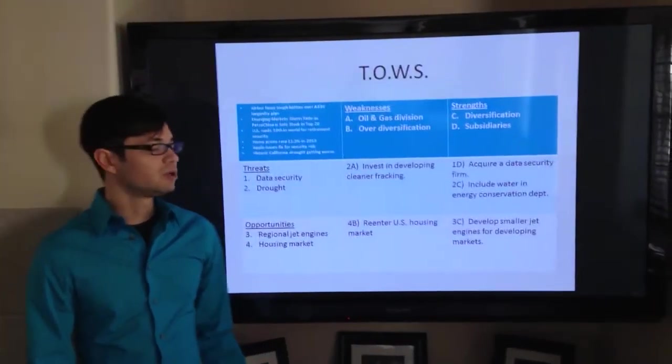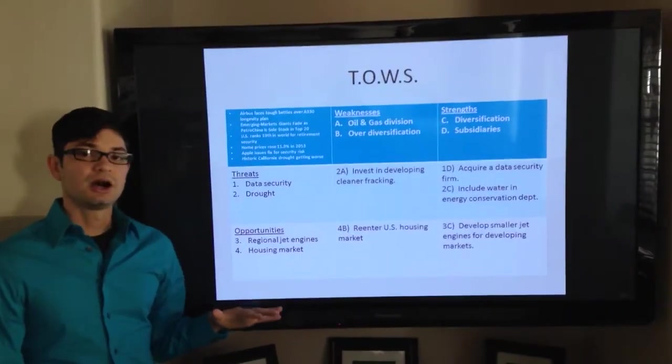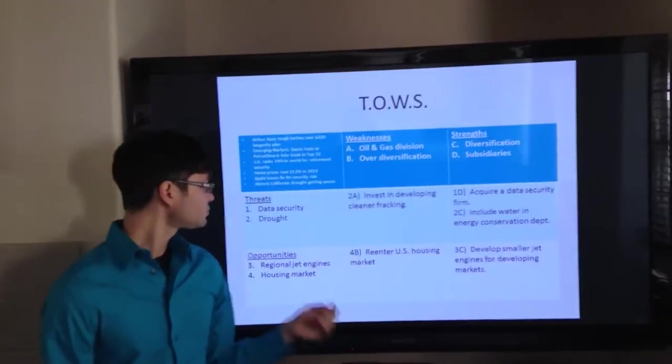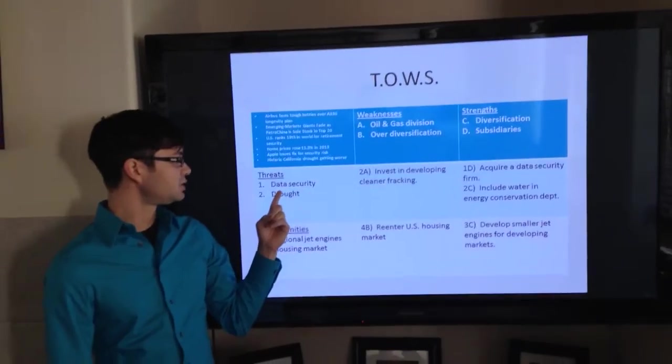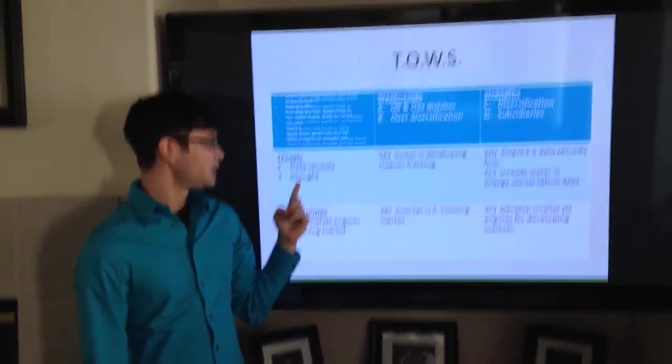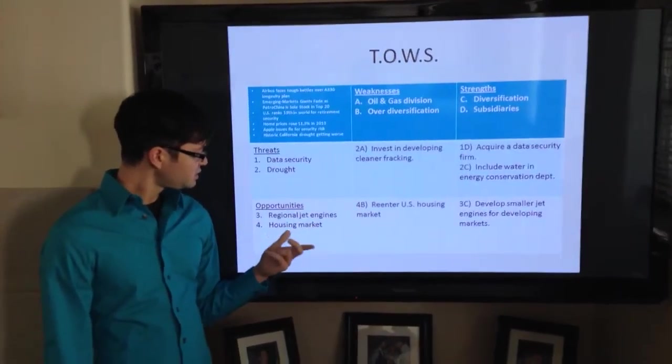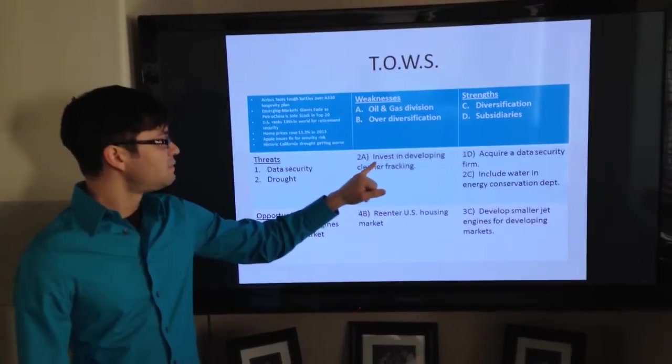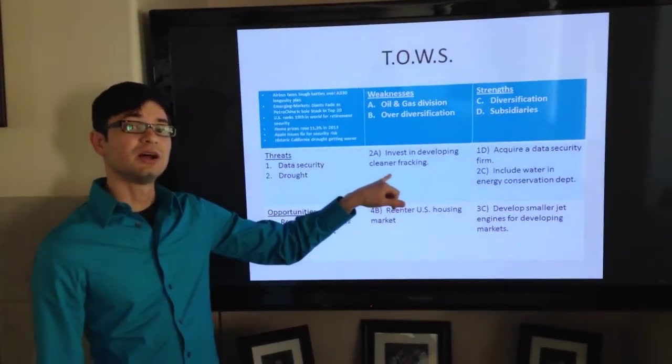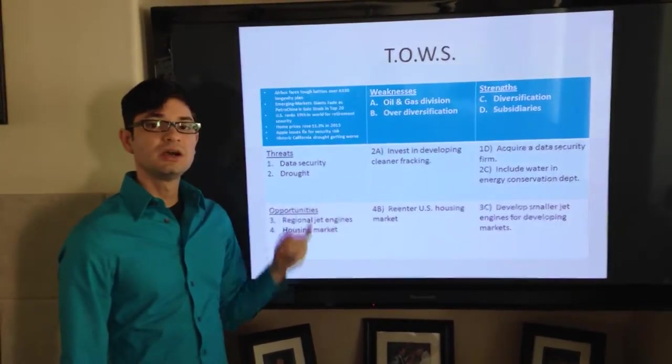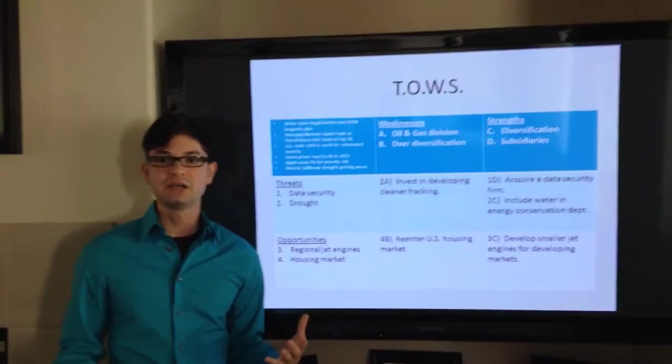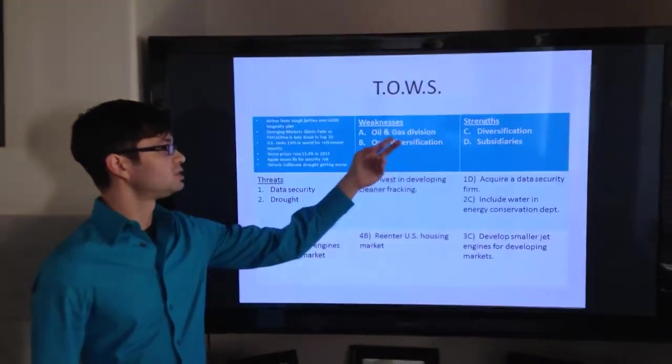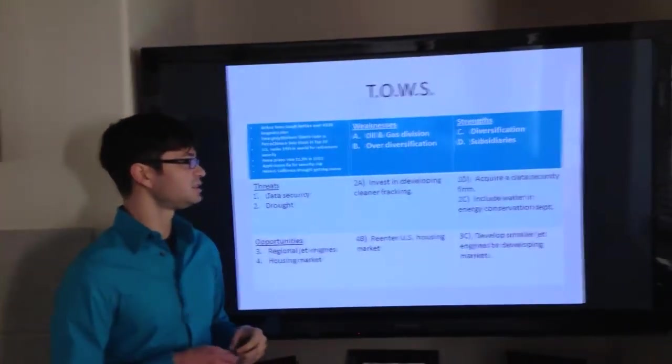It also has a very strong subsidiary portfolio which allows it to cut down on costs when giving work out to third parties. Some of the threats are data security, data security breaches and drought. Opportunities are regional jet engines in the housing market. Some of the strategies I came up with to deal with these were to invest in developing cleaner fracking technologies, and that would primarily take care of drought. By developing a fluid that would replace water, they would be able to alleviate drought conditions and also reestablish a good footprint in their oil and gas division.